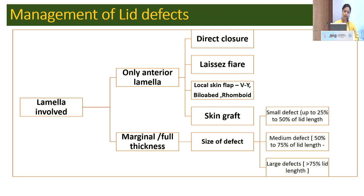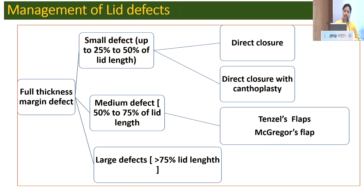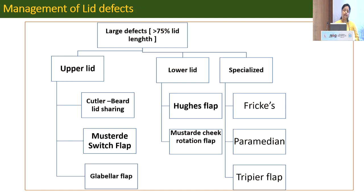If it is a marginal or full thickness defect, the size of the defect plays a role. If it is a small defect of 25 to 50 percent, then direct closure plus or minus canthoplasty. If it is a moderate defect of 50 to 75 percent, then the Tenzel flap and McGregor frames play the role. If it is a large defect of more than 75 percent and it is in the upper lid, then cartilage bear flap, mustard switch flap, or glabellar flap is the choice. If it is in the lower lid, then the Hughes flap or mustard cheek rotation flap is the option. There are also specialized flaps called paramedian and tri-flaps that can be used in both upper and lower lids.